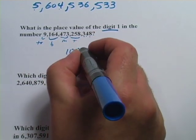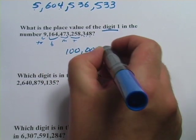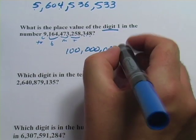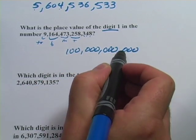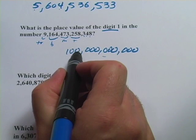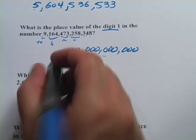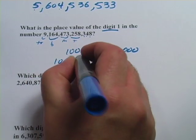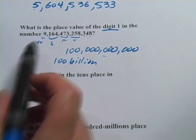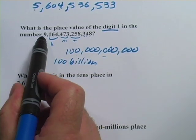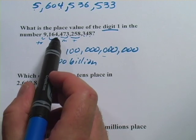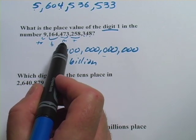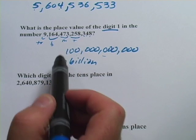So you could say 100, that's a hundred million, that's a hundred billion. So ones, thousands, millions, billions, that's a hundred billion. You could also write 100 billion. This number, if you were to read it off, is 9,164,473,258,348.